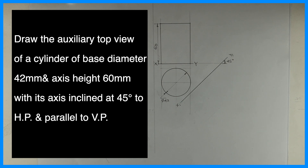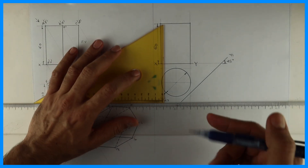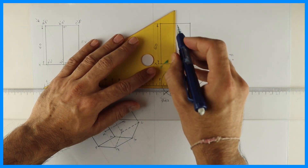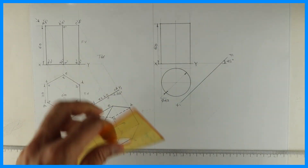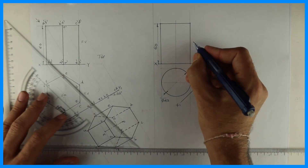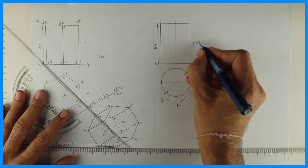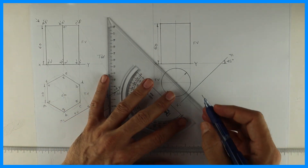In this case, first we will draw the given two views — that is, top view and front view — and we'll draw X1Y1 which is inclined at 45 degrees. We will draw the front view, top view, and generators. The diameter is 42 and height is 60. This is the front view and top view. Now I'm dividing the circle into eight parts.